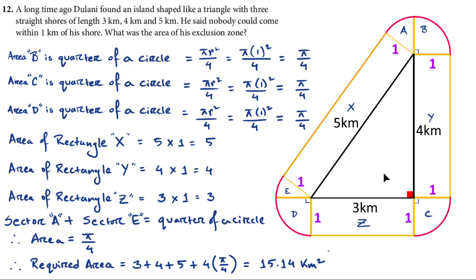So this is the island which is shaped like a triangle and this is the off limits area 1 kilometer outside the island and we need to find the area for this region.